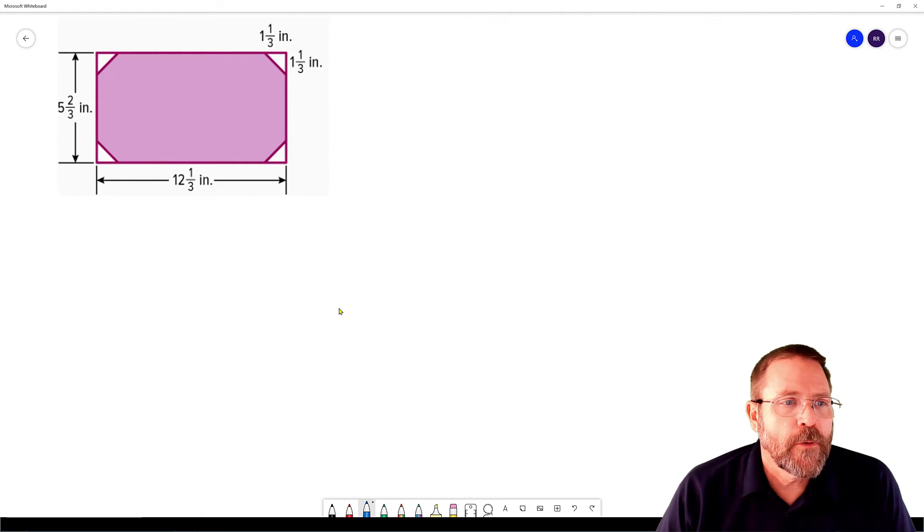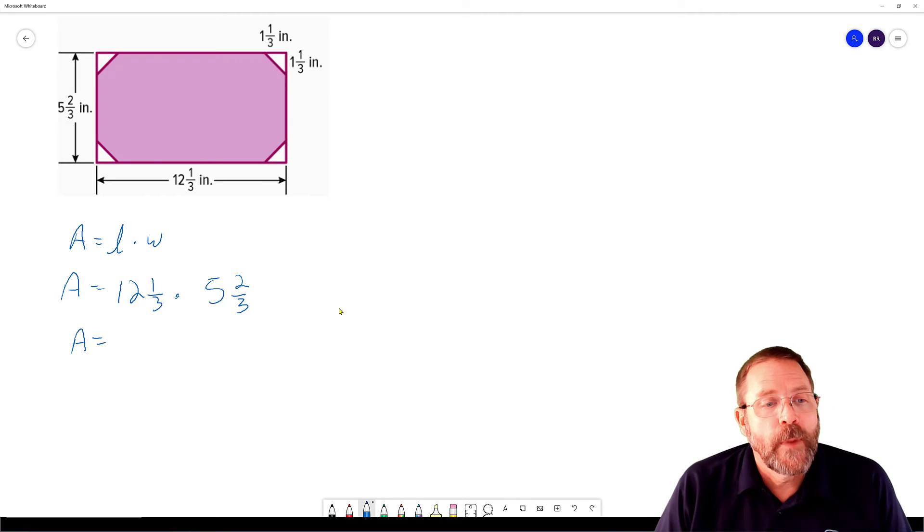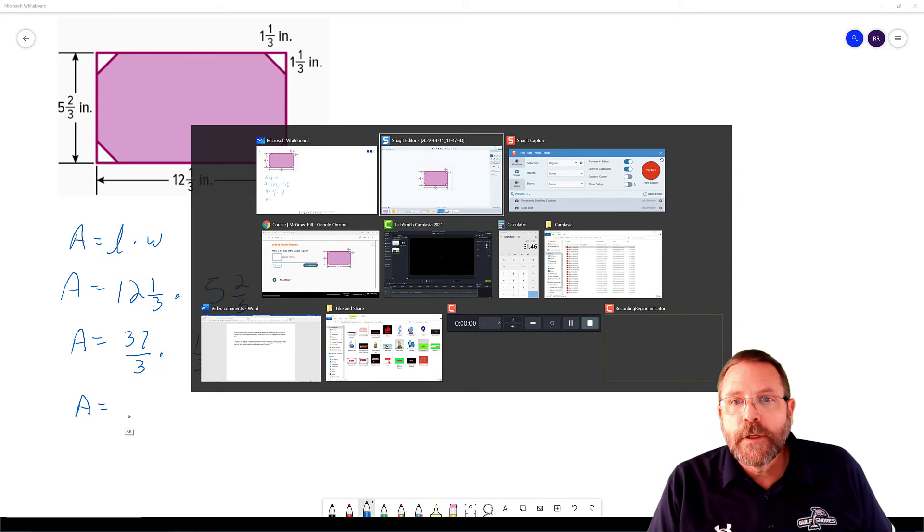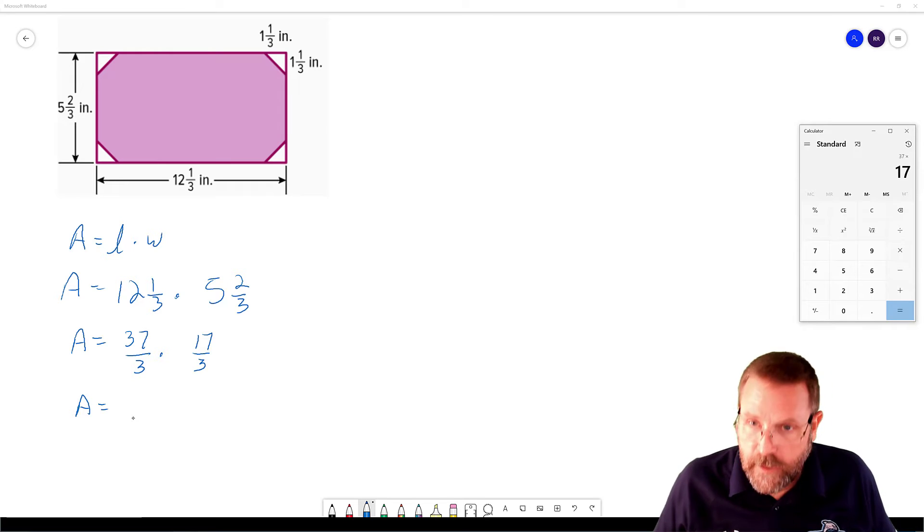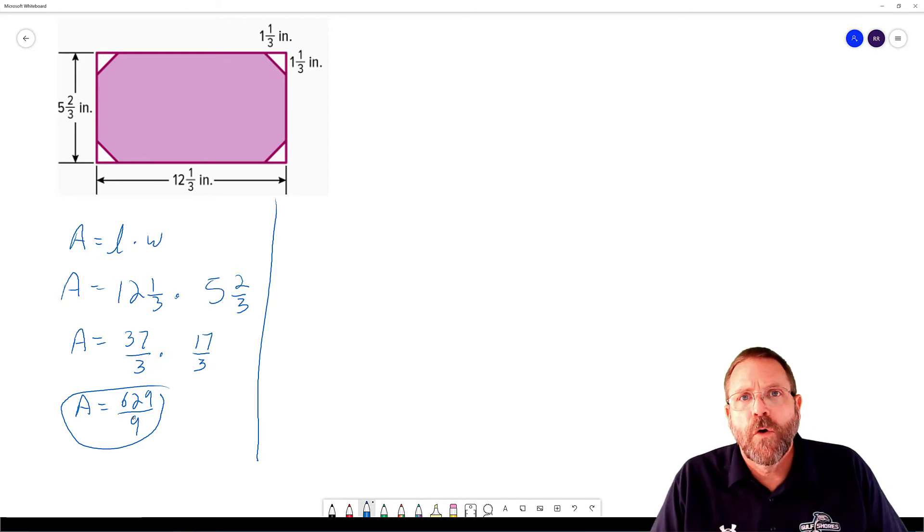Now, I'm going to do the easy part first, which is going to be the area of the rectangle. A rectangle is going to be length times width. So the area of the rectangle is going to be a length of 12 and 1/3 inches times a width of 5 and 2/3 inches. Therefore, the area is going to equal, we're going to do the Texas thing: 3 times 12 is 36 plus 1 is 37 over 3 times 5 times 3 is 15 plus 2 is 17 over 3. And now we're going to multiply that out, which is going to give us 37 times 17 is 629 over 9. And I'm just going to leave it there as an improper fraction.